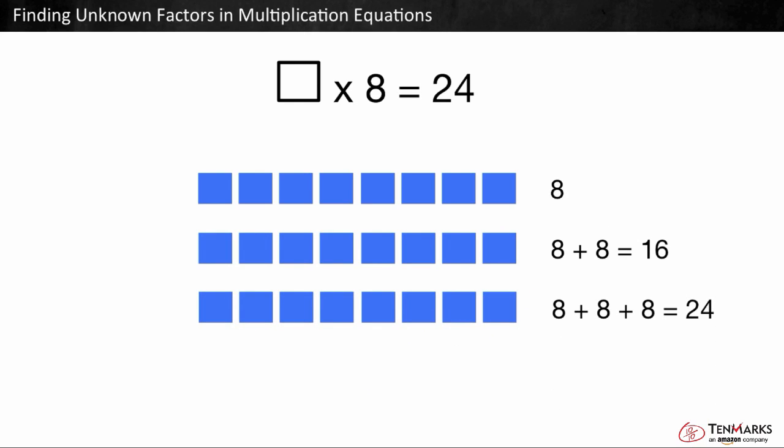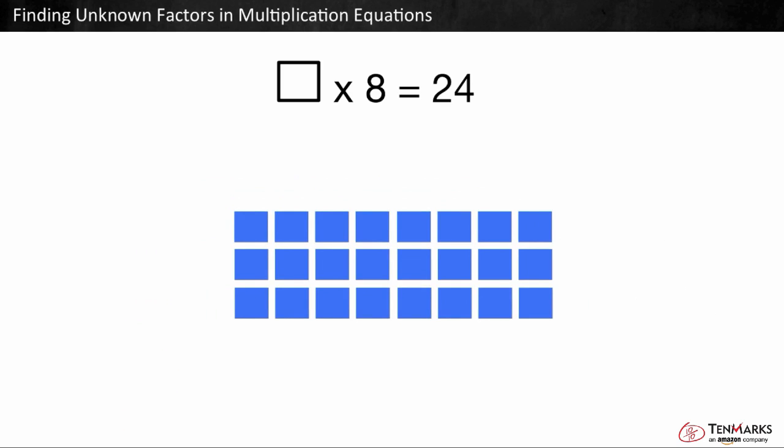How many rows of 8 are there? Well, let's see. One, two, three. There are three rows of 8 tiles. This means the unknown factor is 3. The missing factor here was the number of rows or groups of 8. 8 is the known factor or the number in each group, and 24 is the product or the total number.